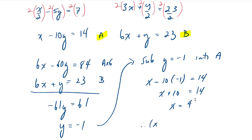Therefore, our point of intersection x, y is equal to 4, negative 1.